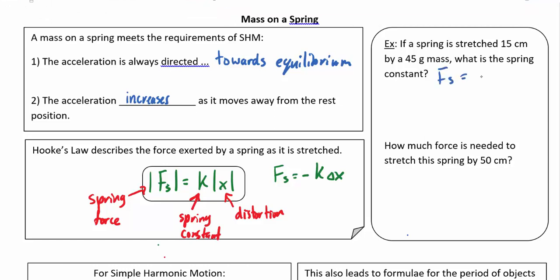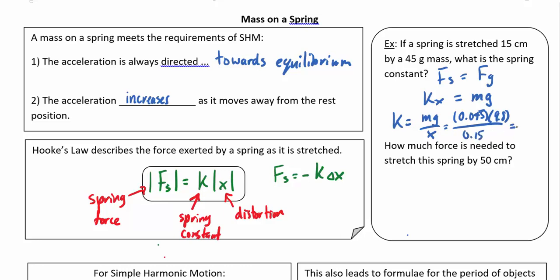The spring force equals the weight being suspended: kx equals mg. Solving for k, we get k equals mg divided by x, which is 0.045 times 9.8 divided by 0.15. The spring constant is 2.9 newtons per meter — force is in newtons and distortion is in meters, so the units must be newtons per meter.